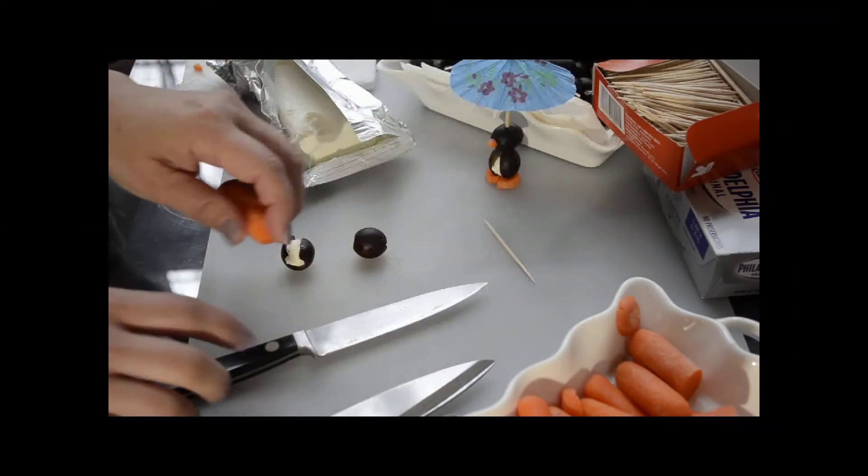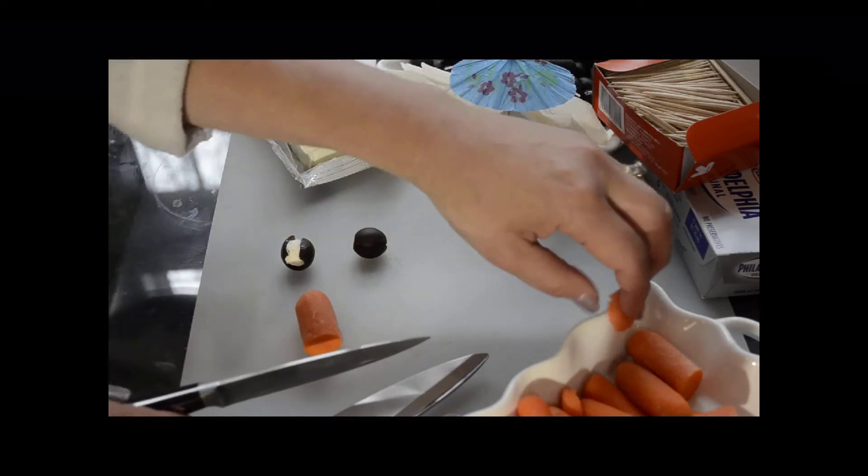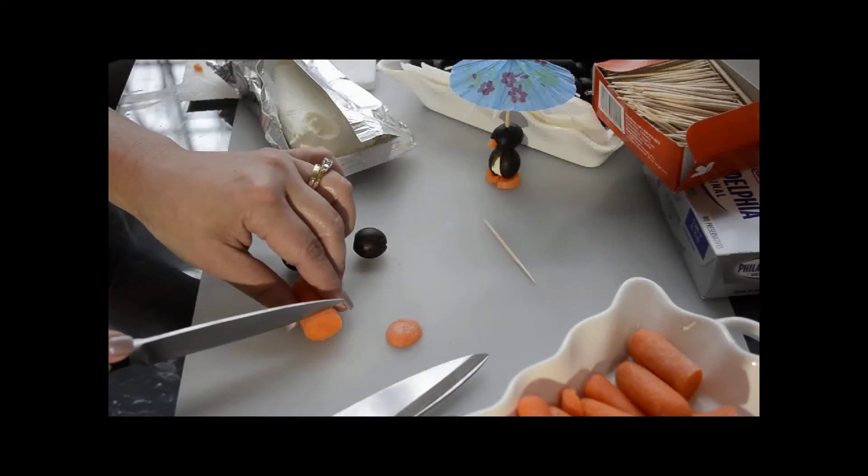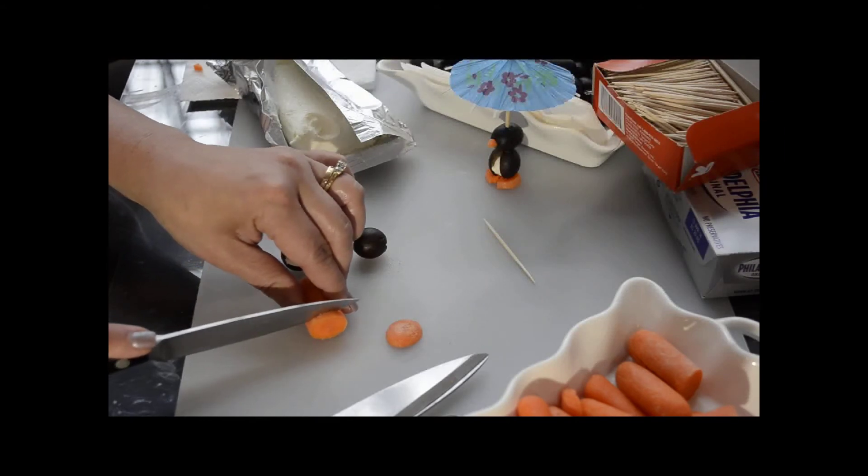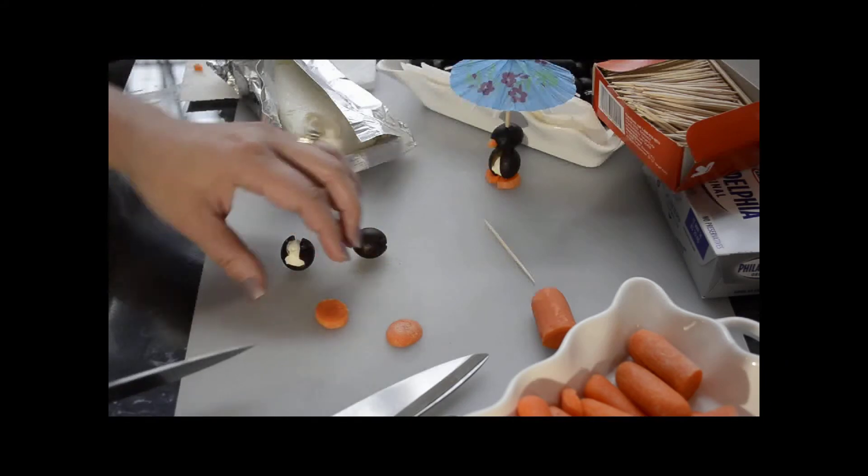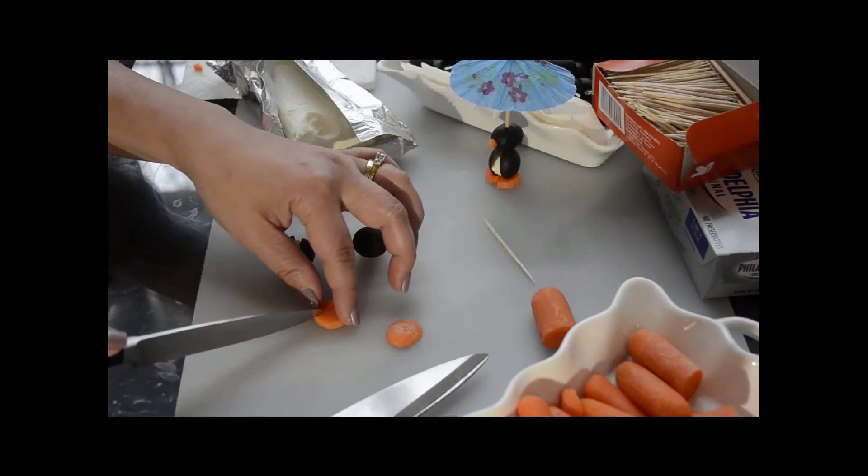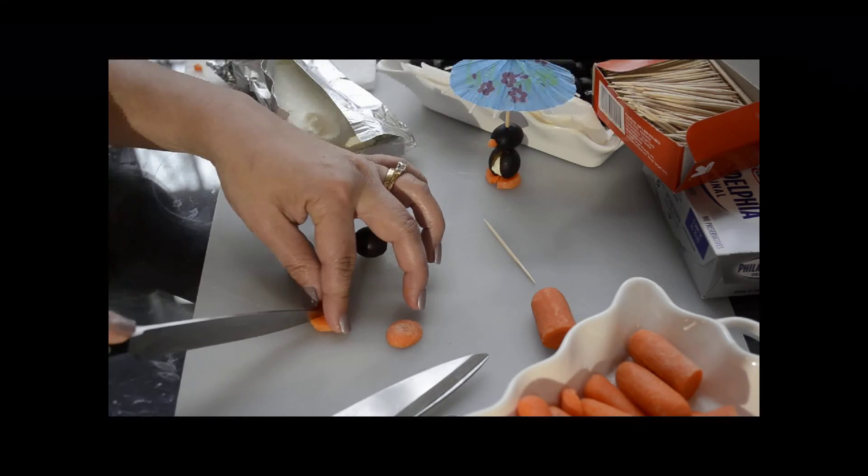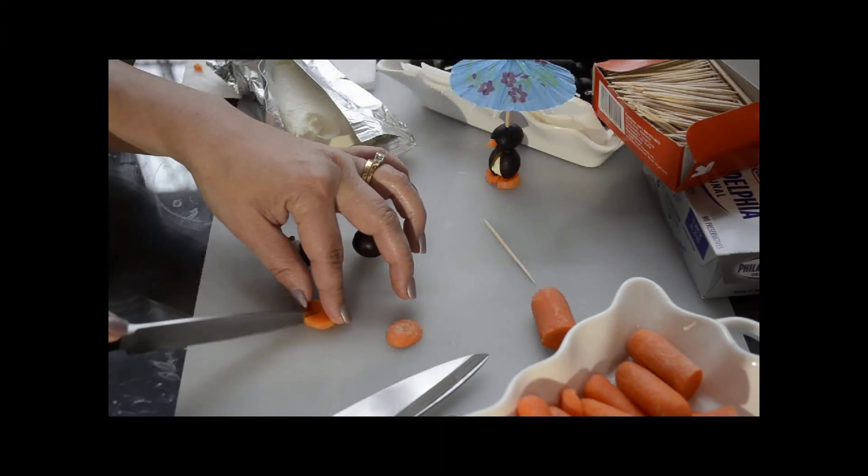Take your carrot and cut the end off so that you have a flat surface, and cut about an eighth inch slice. From this slice, take your knife and cut a small triangle. This will form the beak.